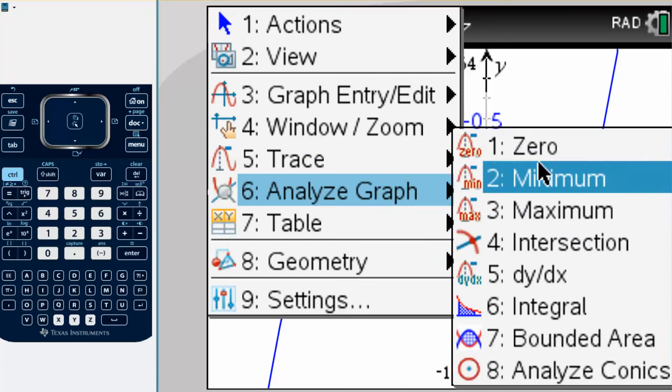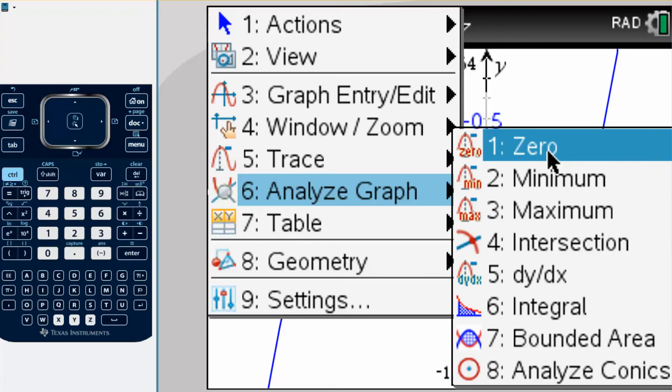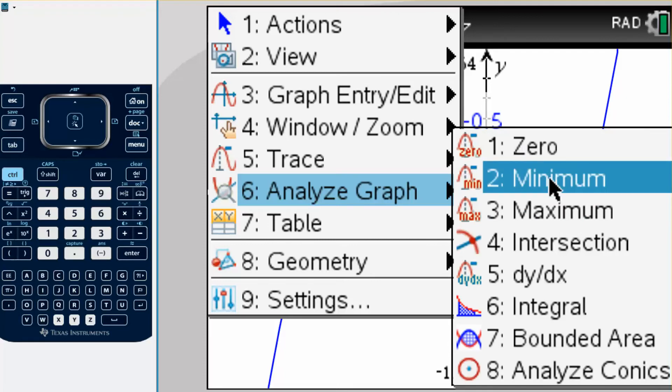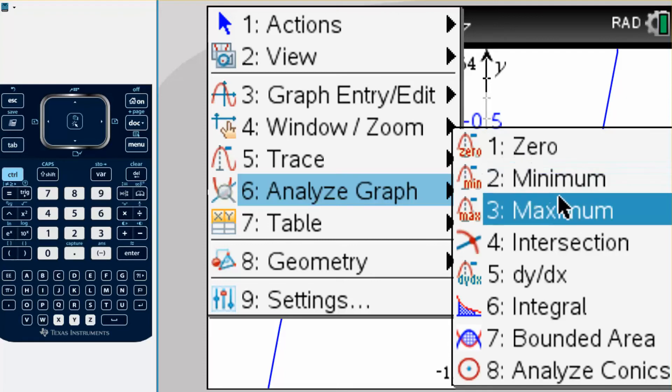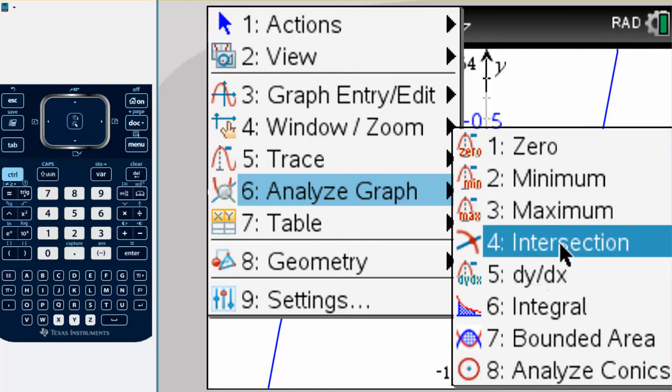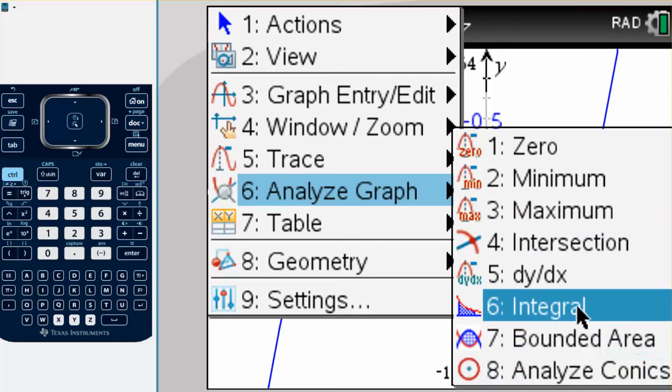You can find the zero, which is the x intercept, right, the zero. You can find the minimums, that'd be where it curves down, the maximum where it curves up, intersection, and we won't really do these other ones.